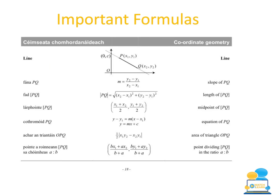Before we start into some exam questions, let's take a look at some important formulas on the coordinate geometry course on page 18 of our formula booklet. In the junior cycle course you should be well aware of the slope of a line, the length of a line, the midpoint of a line and the equation of the line formulas. It's a really good idea to open up this page when you see a coordinate geometry question in your exam because a lot of marks are going for just simply writing down the formula.